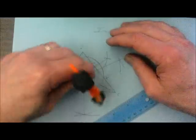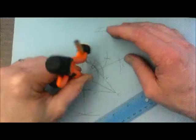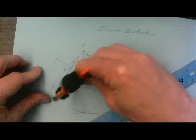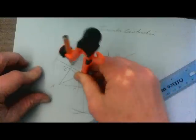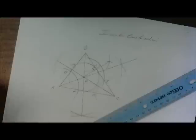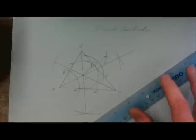So P is my in-center, and I inscribe a circle. So in-center for inscribed. And there we go. And our construction is complete.